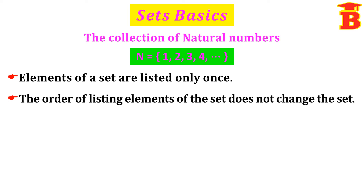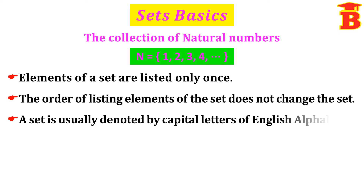The order of listing elements of a set does not change the set. We normally write 1, 2, 3, 4, etcetera, but if we write 2 first and then 1 second, that is also correct — for example 2, 1, 4, 3, etcetera. The only requirement is that we must write all the numbers in the set, but the order may be different. Also, a set is usually denoted by capital letters of English alphabets. For natural numbers we use the capital letter N.